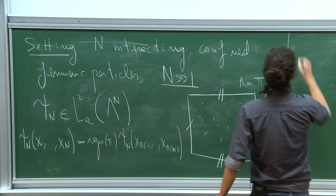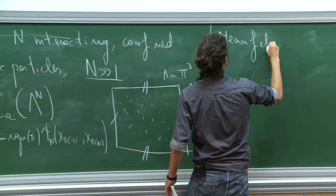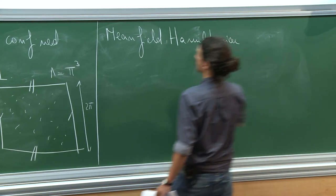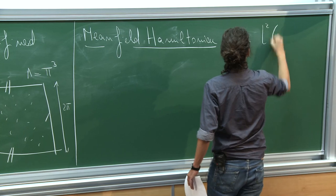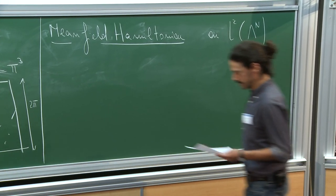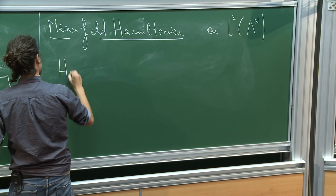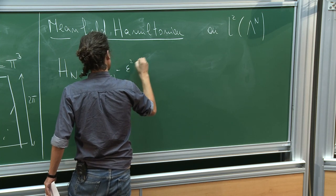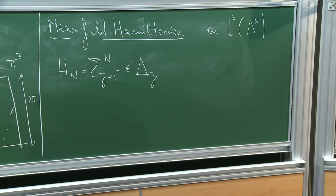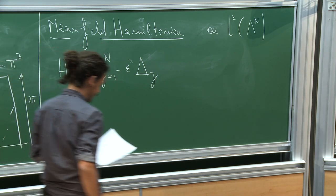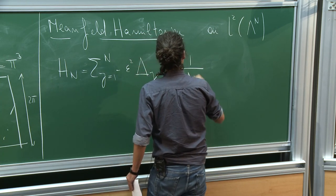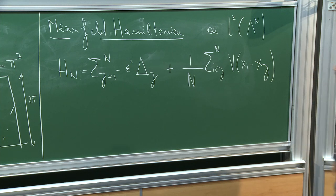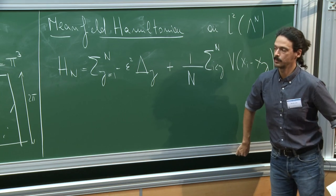I will consider a mean field Hamiltonian — a self-adjoint operator on L^2 antisymmetric of lambda^N. There is a first part encoding the kinetic energy with a semiclassical parameter epsilon squared, and then a many-body interaction of mean field type: a pair interaction with a two-body potential. For now, think of it as a bounded potential.